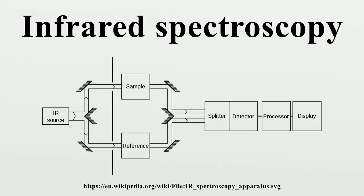IR spectroscopy is often used to identify structures because functional groups give rise to characteristic bands both in terms of intensity and position. The positions of these bands are summarized in correlation tables. For many kinds of samples, the assignments are known — which bond deformations are associated with which frequency. In such cases, further information can be gleaned about the strength of a bond, relying on the empirical guideline called Badger's rule.